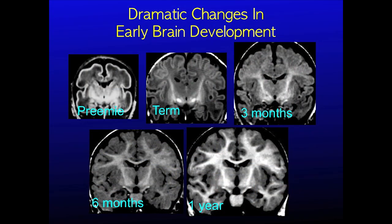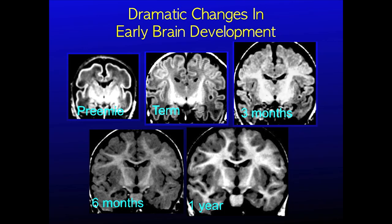Look at these MRI images. Here the babies are facing us and the MRI allows us to see inside the head. During this time period the brain increases more than three times in volume, the neurons develop more than twice the number of connections, and the energy used by the brain also increases by more than twice.